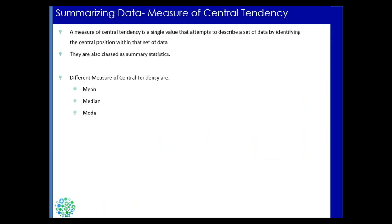Now let's get more statistical. The first part of statistics we'll cover is called measure of central tendency. As the name suggests, it identifies the value most tended towards the center — what is the central value of the data. There are different measures: mean, median, and mode.